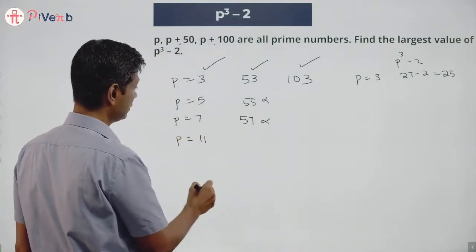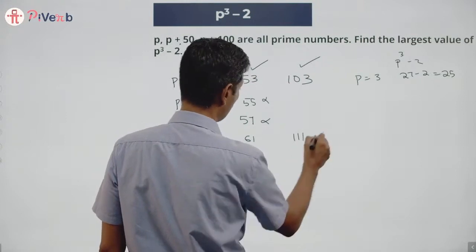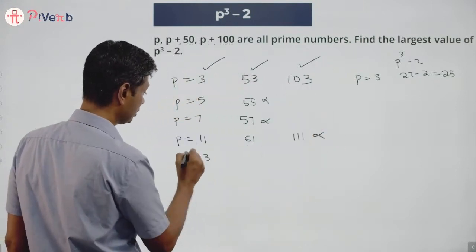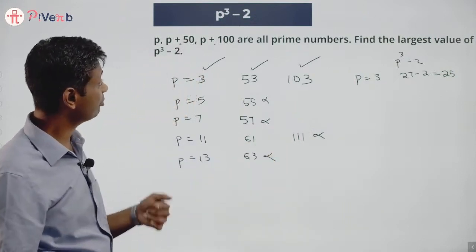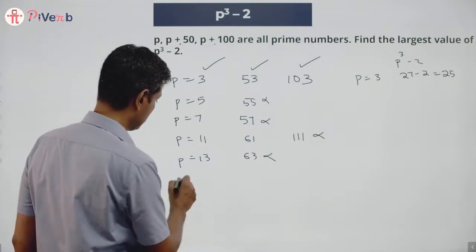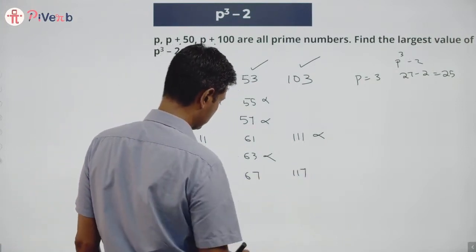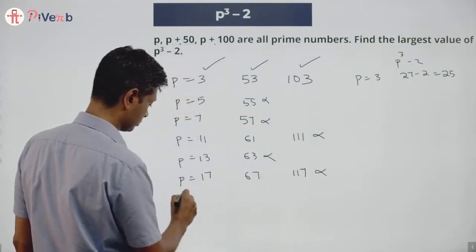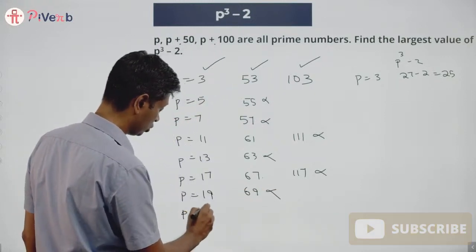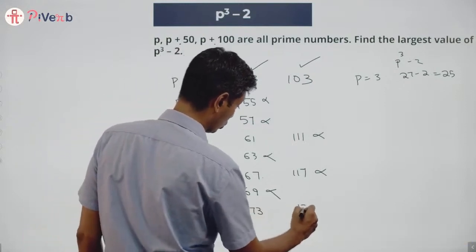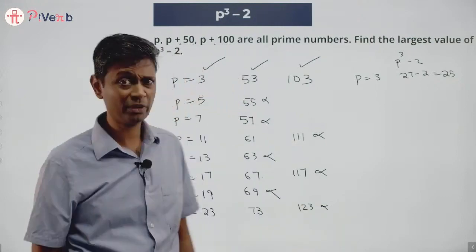Next prime number is 11. 50 plus 11 is 61, 100 plus 11 is 111. This is not prime. Let us put p equal to 17: 17, 67, 117 — this is not prime. p equal to 19: 69 — oh, this is not prime. p equal to 23: 73, 123 — this is not prime. I am having trouble. I thought I will find one more, two more, three more and be able to find the largest value.